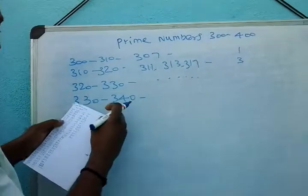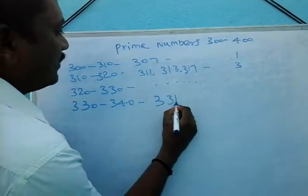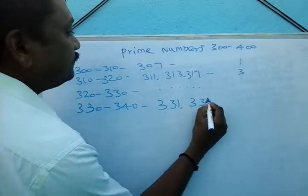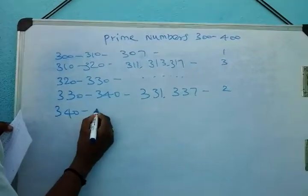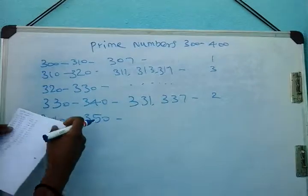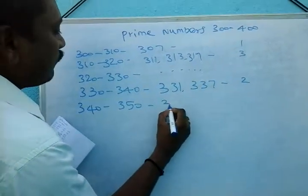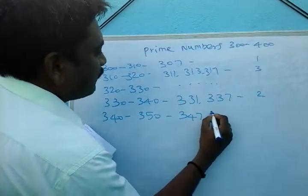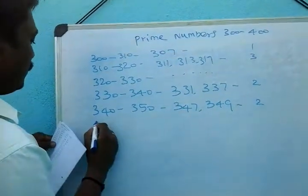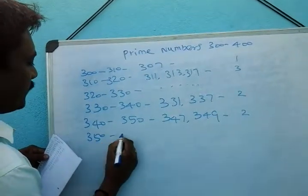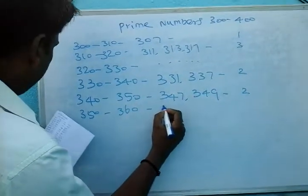330 to 340: there are two prime numbers. 340 to 350: there are no prime numbers. 347 and 349 — two prime numbers between 350 to 360.